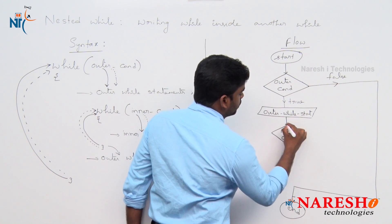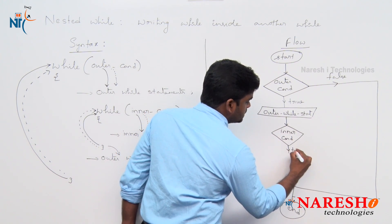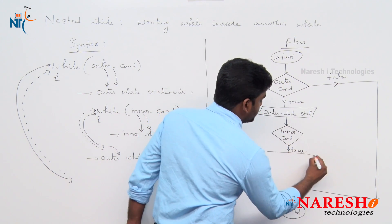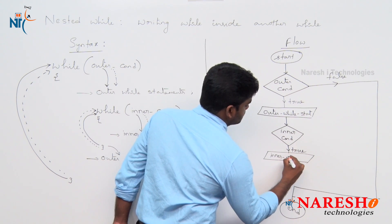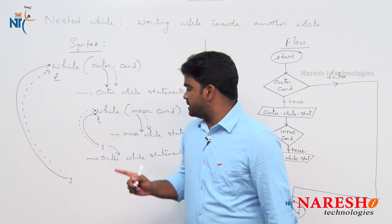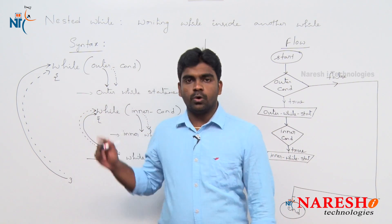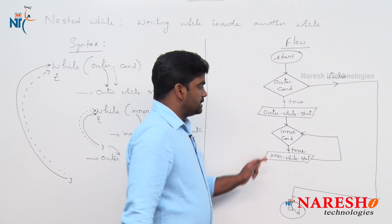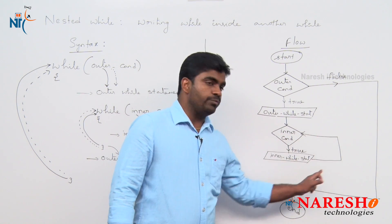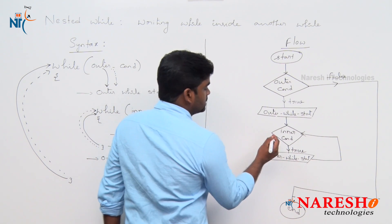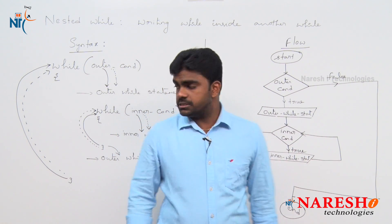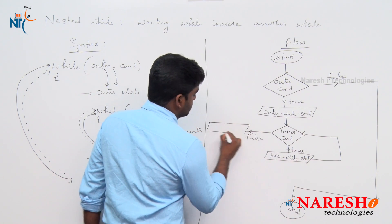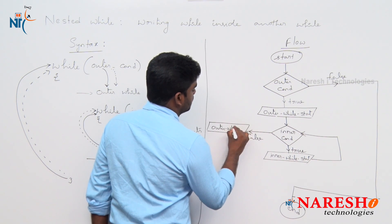For inner condition: if it is true, inner while loop statements execute. After executing inner while loop statements, it will repeat — going back to check inner condition again. Again it checks if inner condition is true or false. If true, again it repeats. When inner condition is false, remaining outer while loop statements execute.